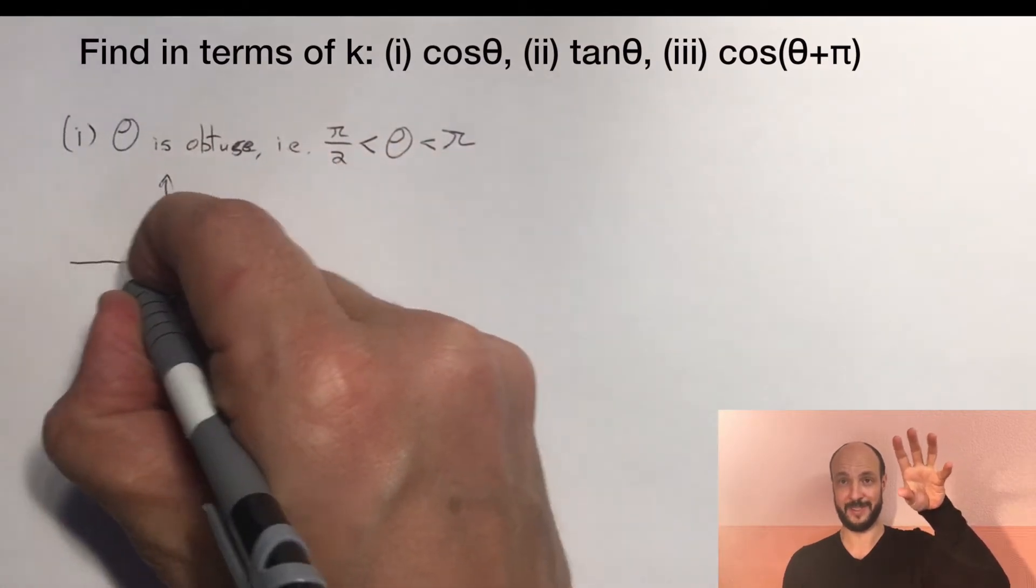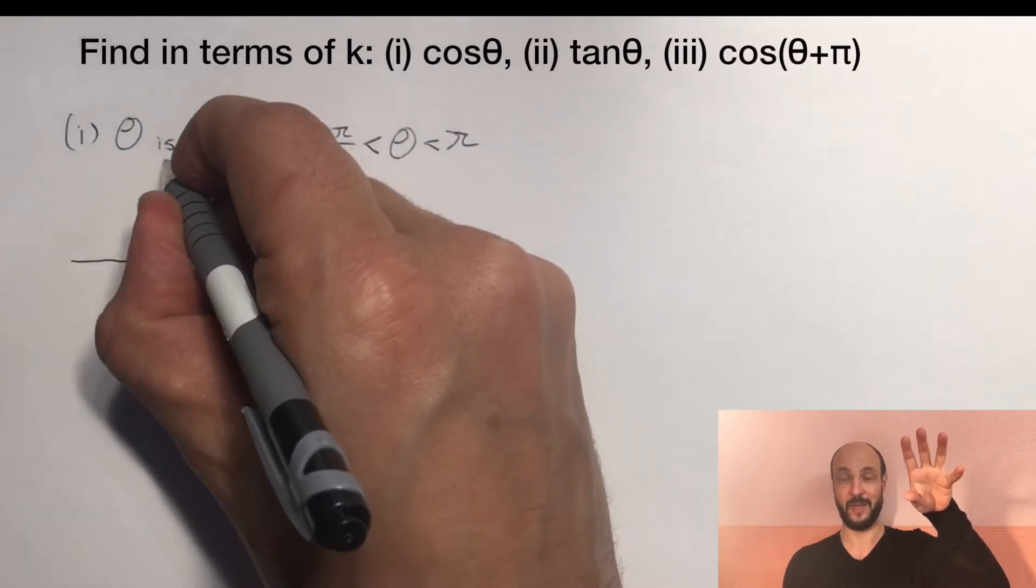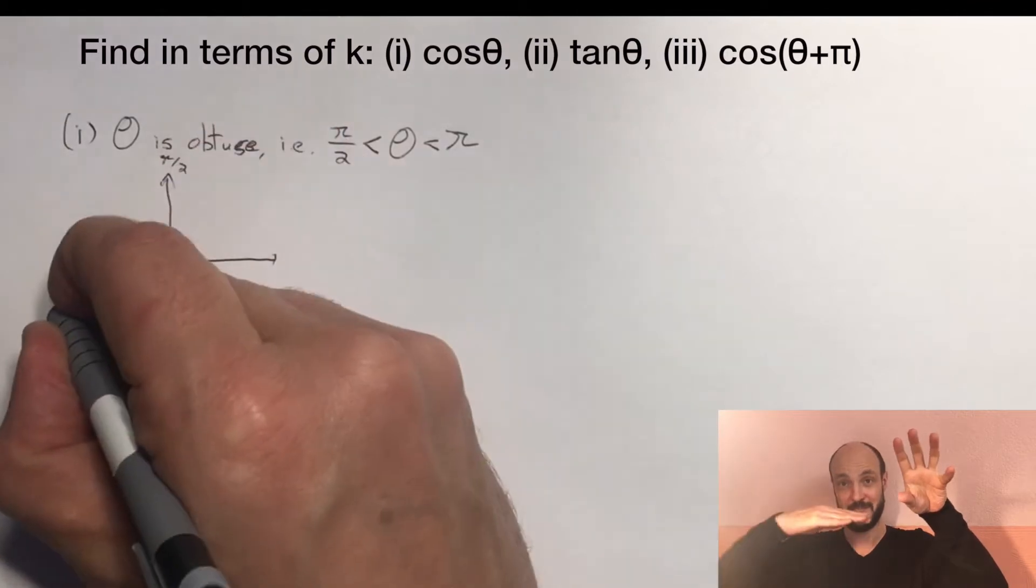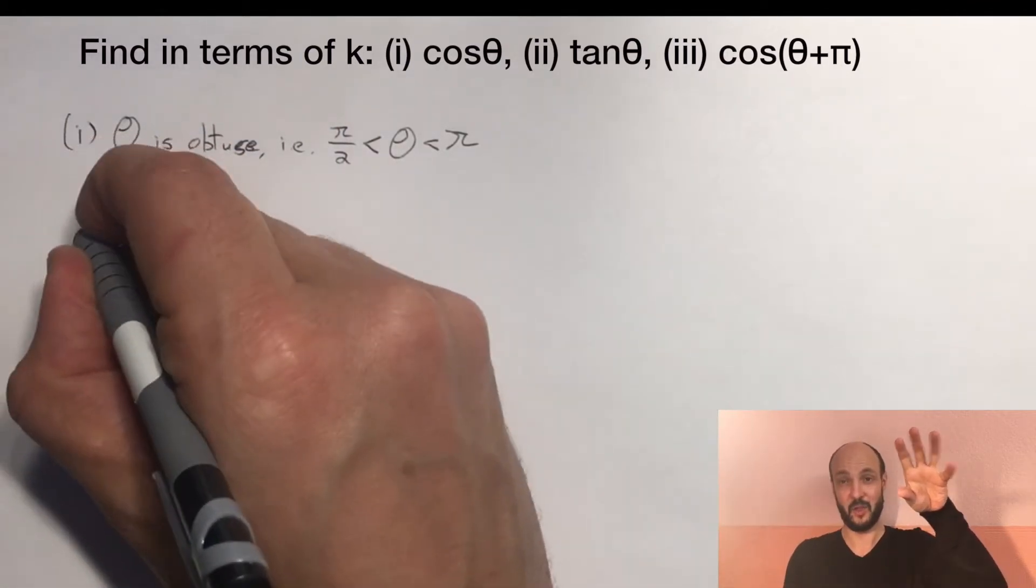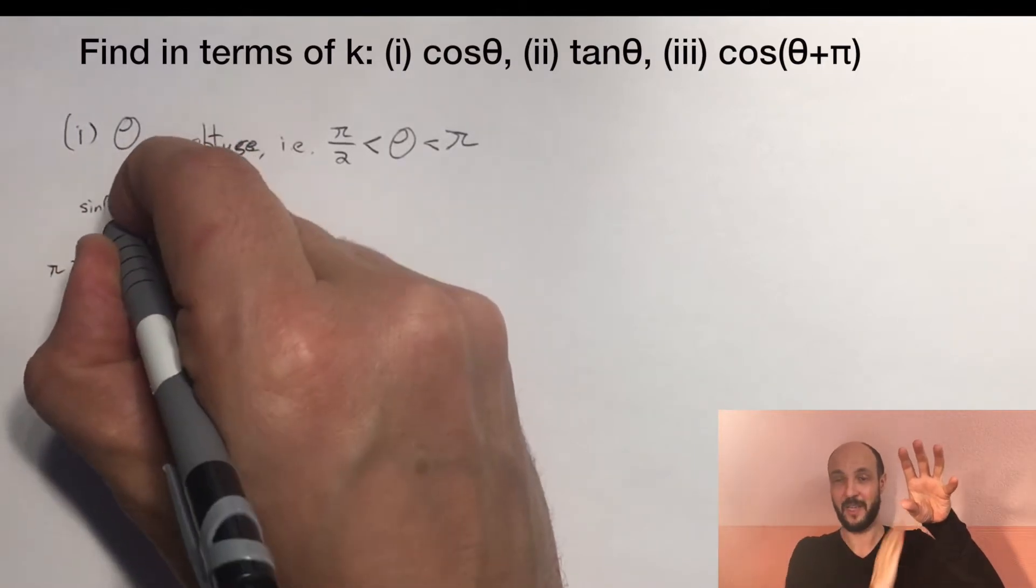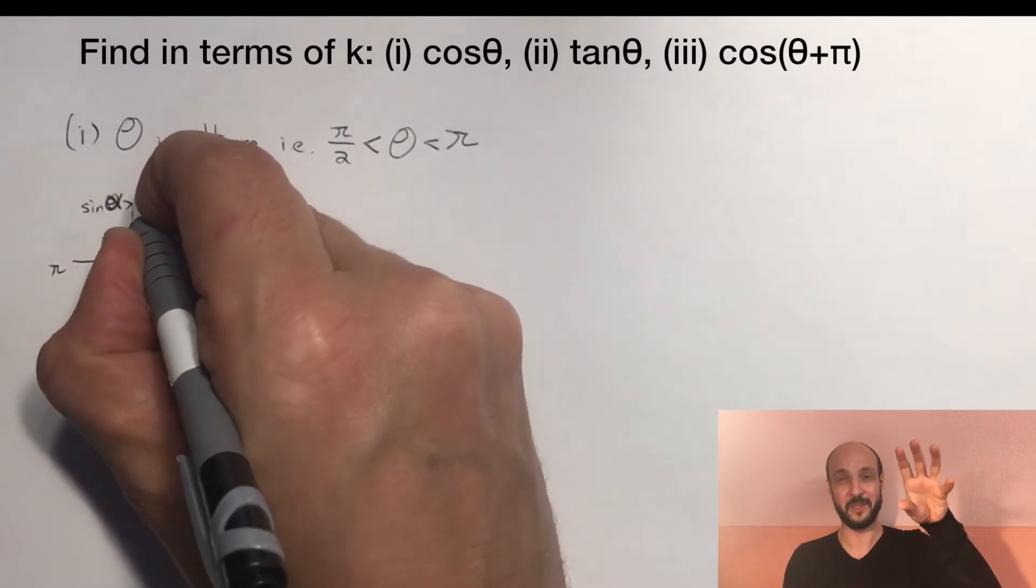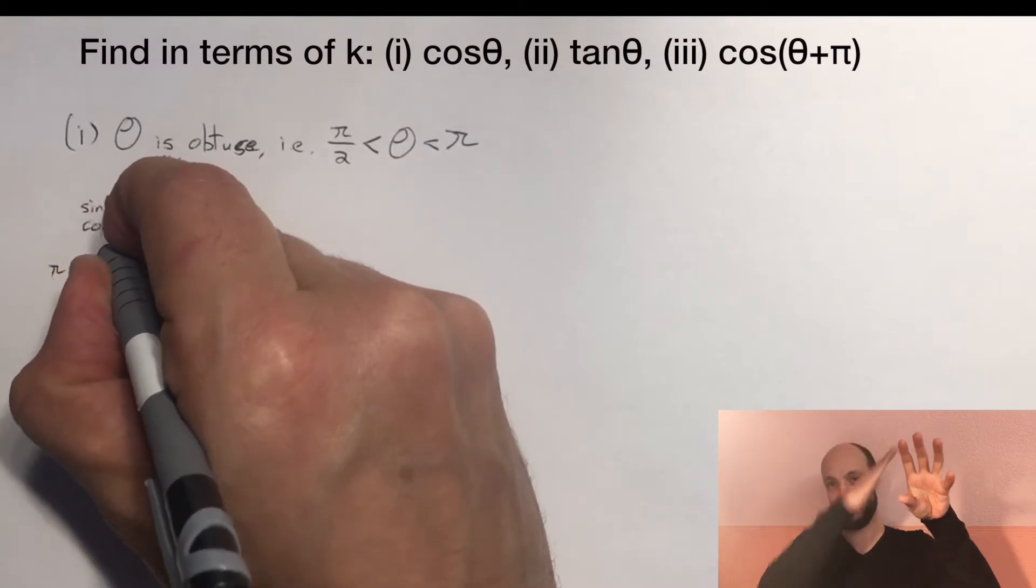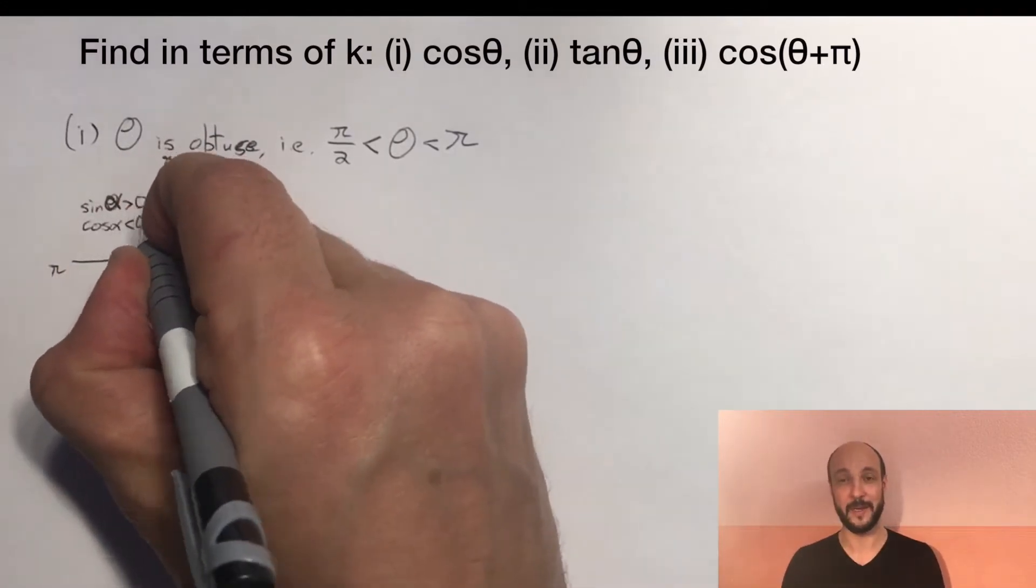In this quadrant, the sine answers are always going to be positive because it's above the x-axis. The cosine answer is always going to be negative because it's to the left of the y-axis, and the tangent values are always going to be negative because we're on the downward slope here.